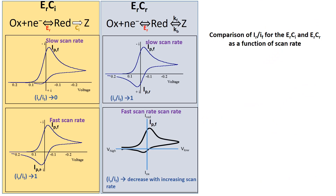Let's compare side by side the ERCI process and the ERCR process. For the ERCI process at slow scan rate, you will not get the anodic peak because there will be no red available for oxidation during the reverse scan. However, for the ERCR case at slow scan rate, red will be available for oxidation, and additionally the equilibrium between red and Z will be maintained by converting Z to red. So at the slowest scan rate, you can expect an increase in anodic peak current intensity — it will behave almost reversibly.